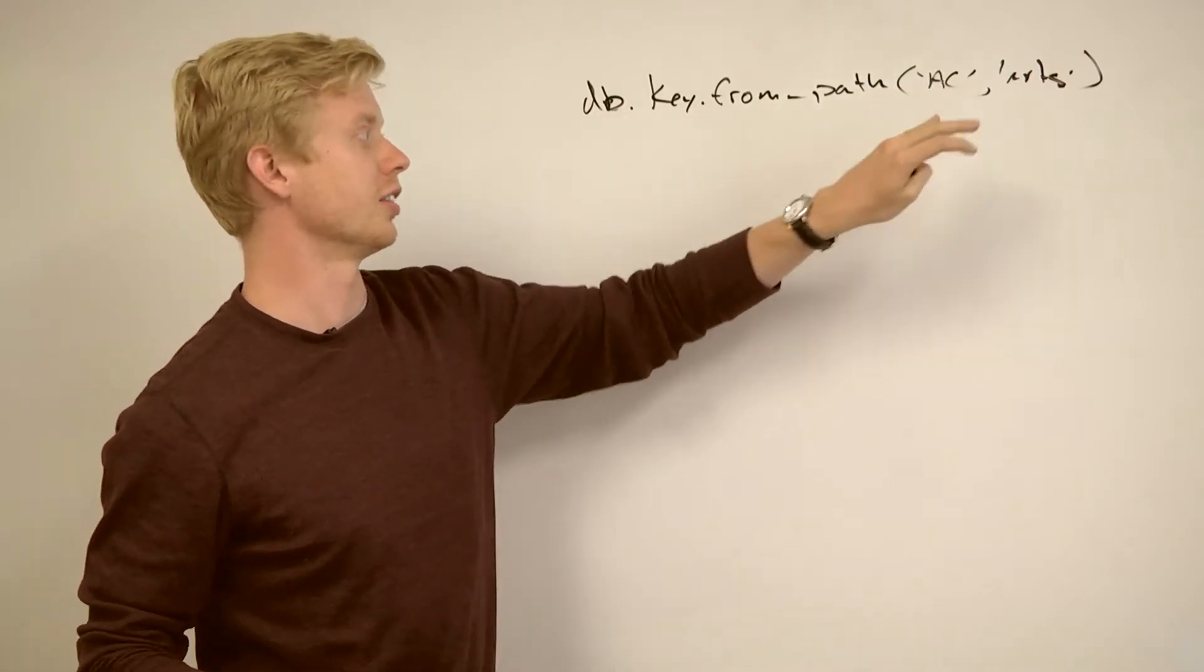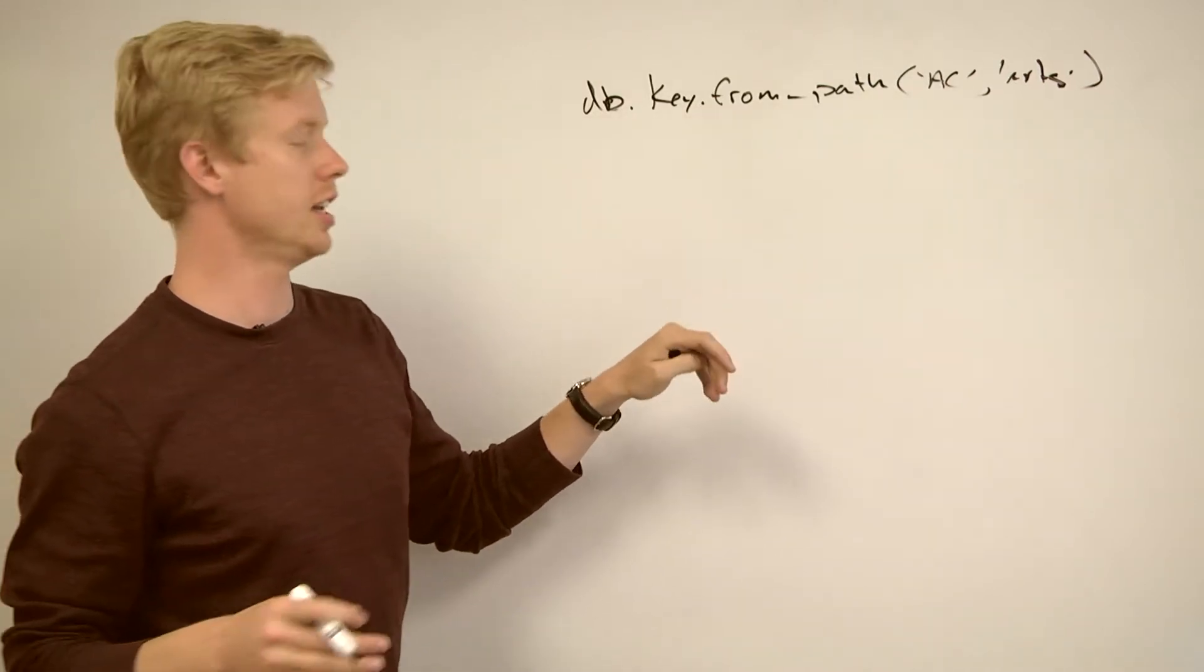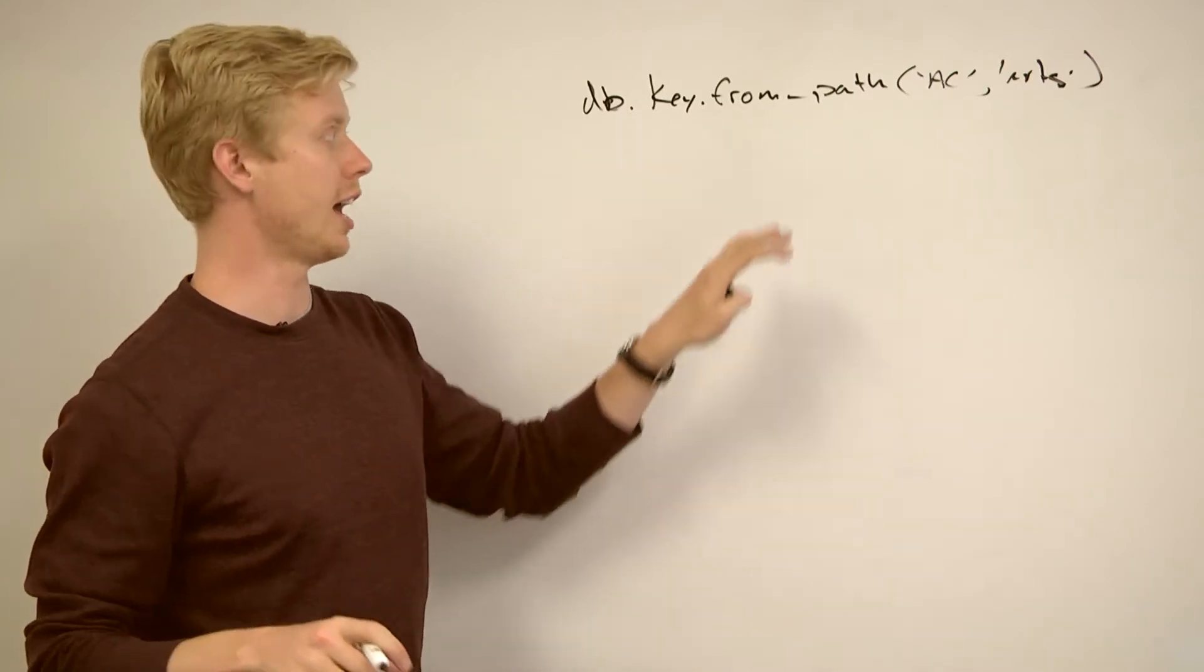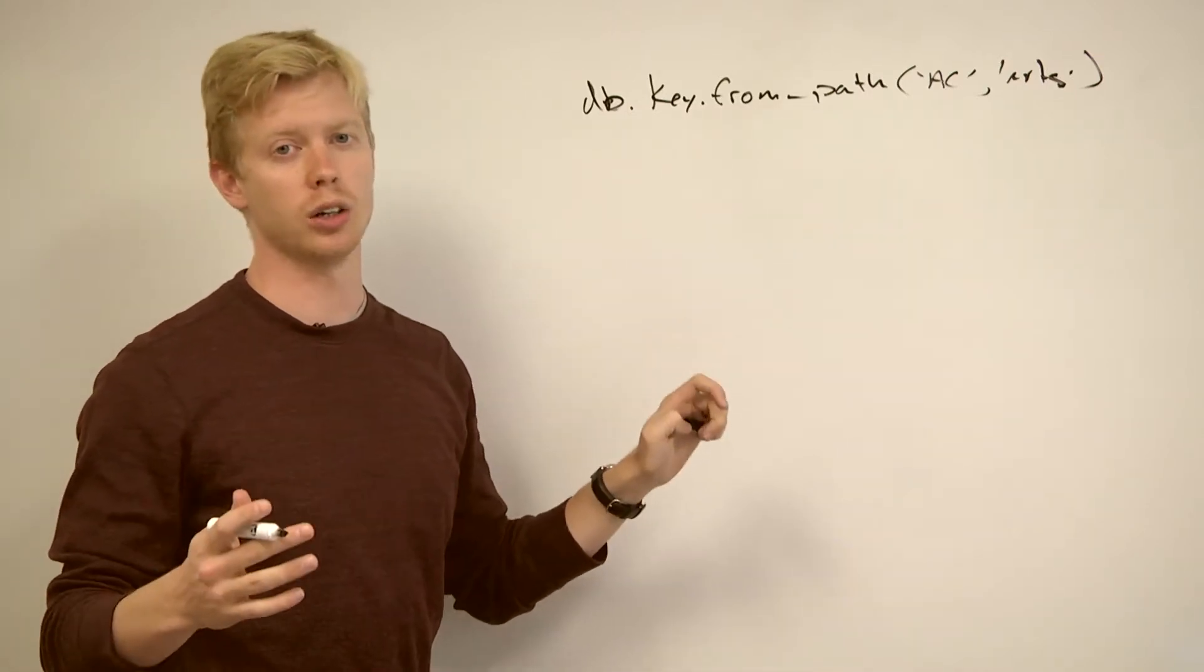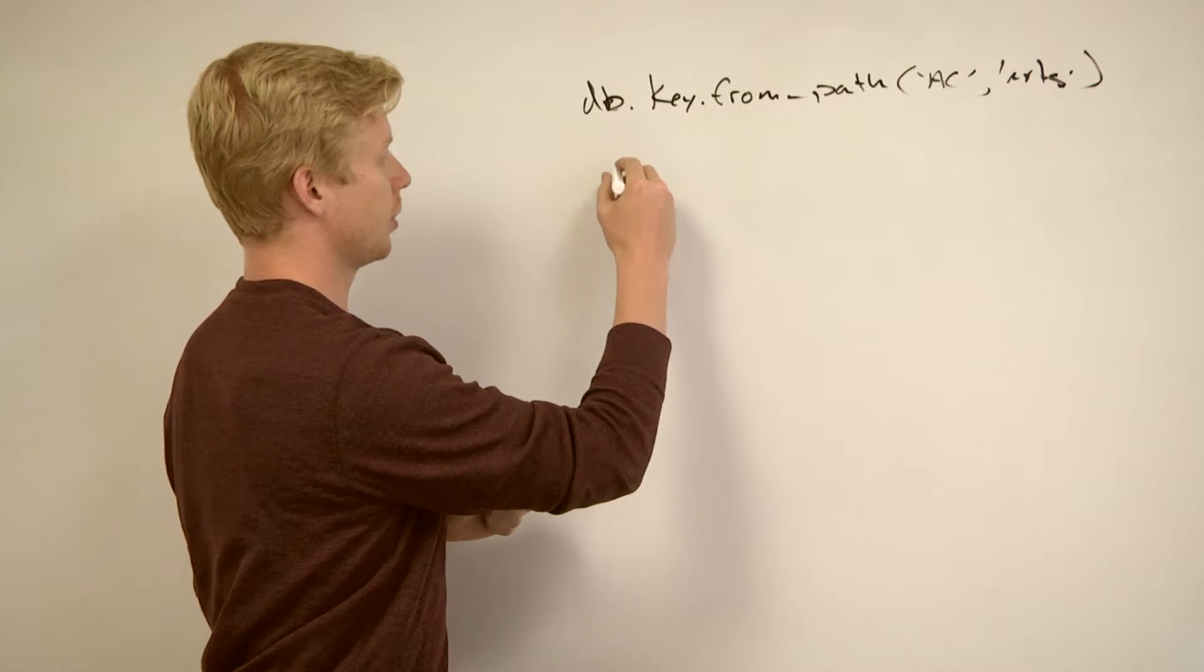And so what this does is this actually creates a datastore key for an object that doesn't exist. But what I basically said is all of my arts are going to have this parent, and when I created arts,